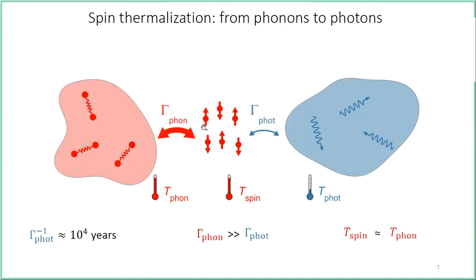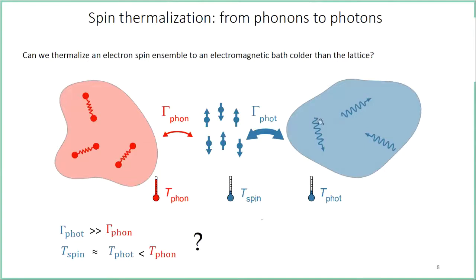The temperature of the spins is given by the relative strength with which the spins interact with the two baths, represented by the spontaneous emission rate gamma for a single spin into each bath. For an electron spin, the spontaneous photon emission time is about 10,000 years, so in most situations the phonon spontaneous emission rate is orders of magnitude larger than the photon one. As a result, the spin ensemble temperature is always set by the phonons, independently of the electromagnetic environment.